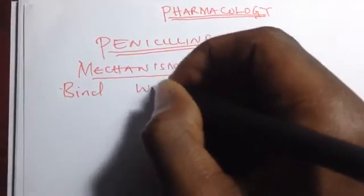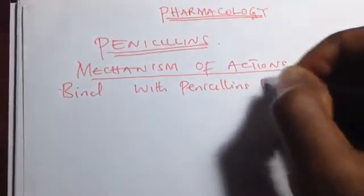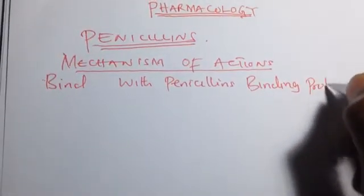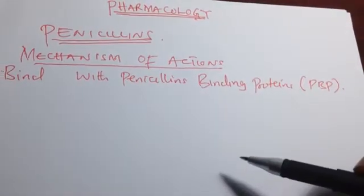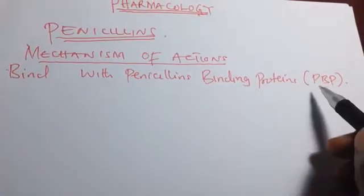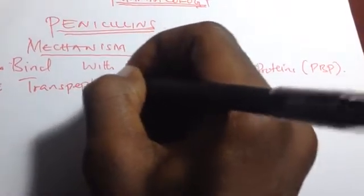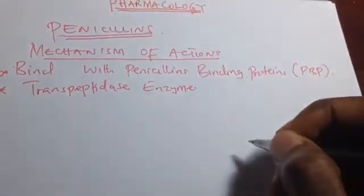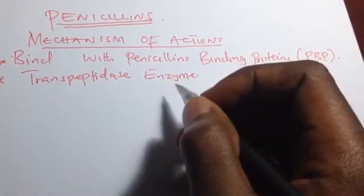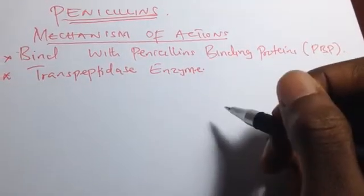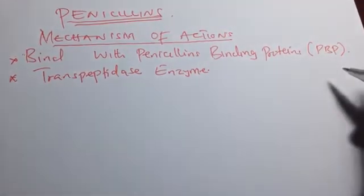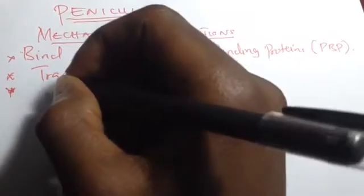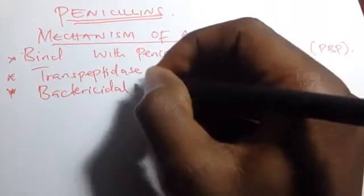The most important mechanism of action of penicillin is when the penicillin binds with a protein called the penicillin binding protein, also known as the PBP. This PBP is found in the cell wall of the bacteria. When penicillin interacts with this PBP, it inhibits an enzyme known as the transpeptidase enzyme. By inhibiting transpeptidase, which is involved in the cross-linking of proteins in the final stage of cell wall synthesis, no cell wall is formed. The bacteria then fill with water and burst, which is why penicillins are known as bactericidal — because they kill the bacteria.